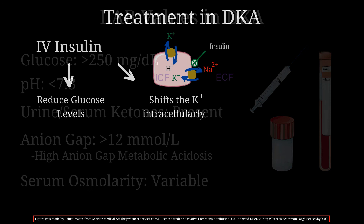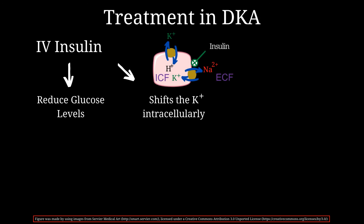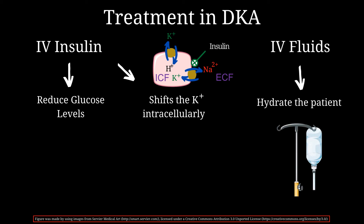Treatment of diabetic ketoacidosis revolves primarily around administering insulin. Insulin returns high glucose levels back to normal and shuts down further production of ketone bodies, helping manage acidosis. Insulin also stimulates the sodium-potassium channel on cell membranes, shifting potassium from extracellular fluid back into intracellular fluid, returning potassium levels toward normal. IV fluids are also given to hydrate the patient, as fluid was lost due to the osmotic effect of glucose.